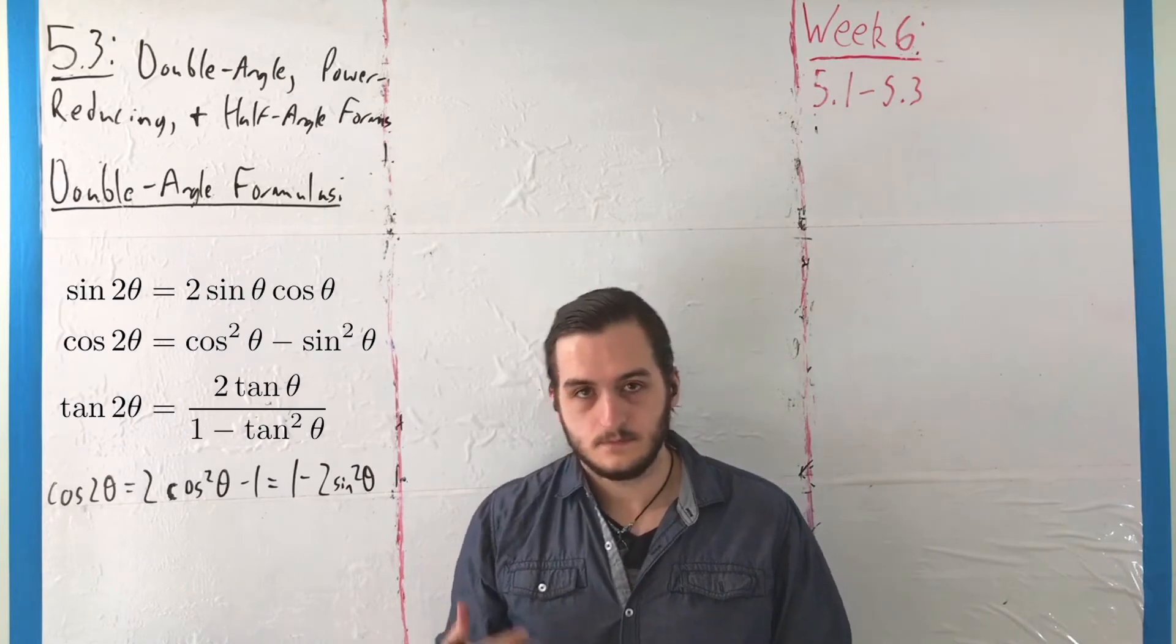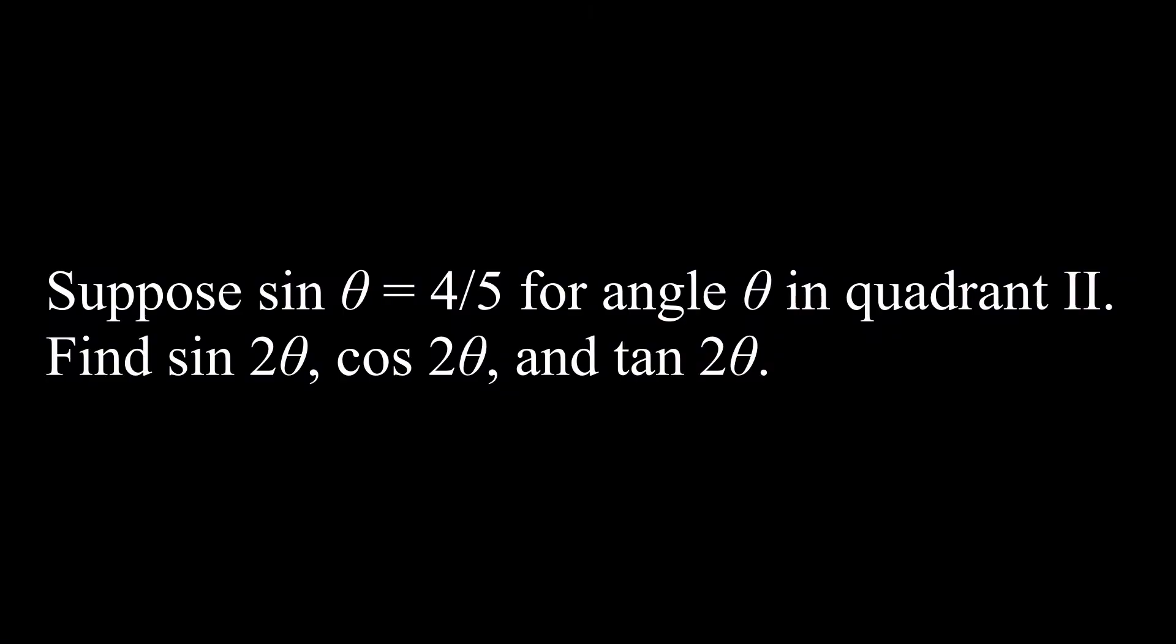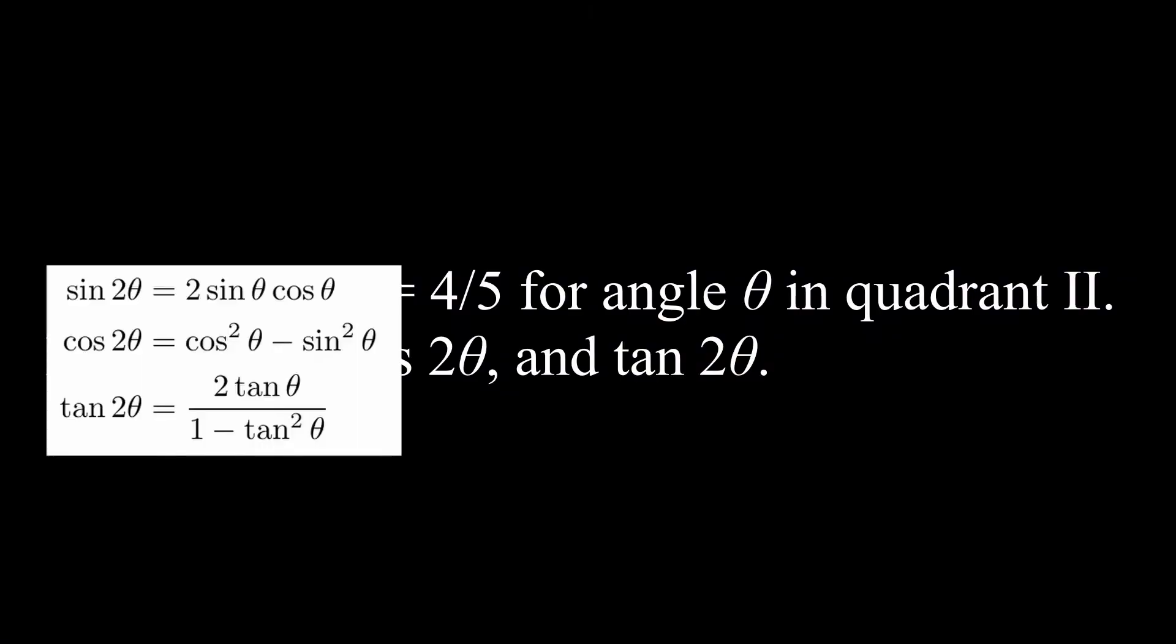To understand this, we're going to look at an example which should be familiar. Suppose that sine of θ equals 4/5 for angle θ in quadrant II. Find sine of 2θ, cosine of 2θ, and tangent of 2θ.